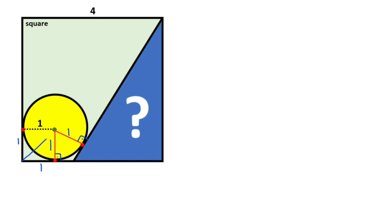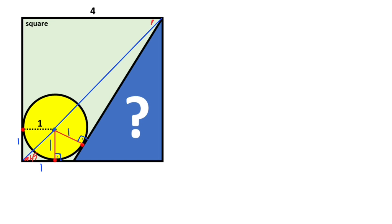After that, if we connect these two points, here must be equal to 45 degrees because of the diagonal of the small square. And then if we extend the center point line, this line is also the diagonal of the big square, so here must be equal to 45 degrees. If you focus on this triangle, if there's one unit opposite 45 degrees, opposite 90 degrees, here must be equal to root 2.